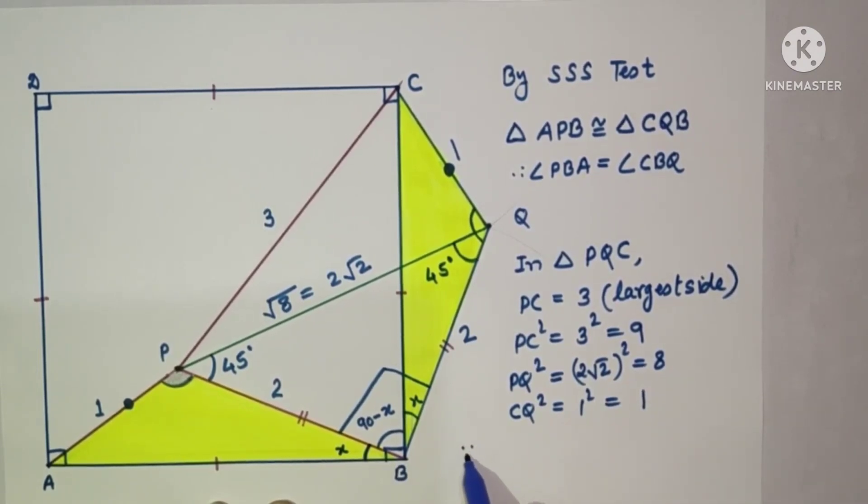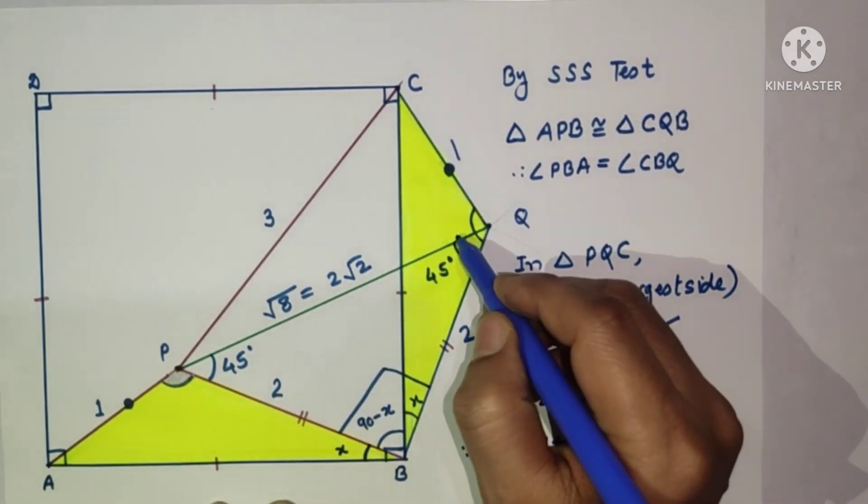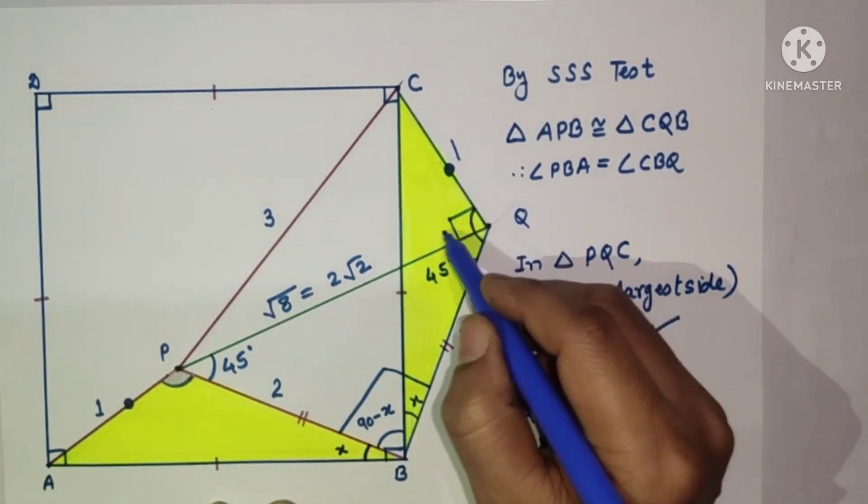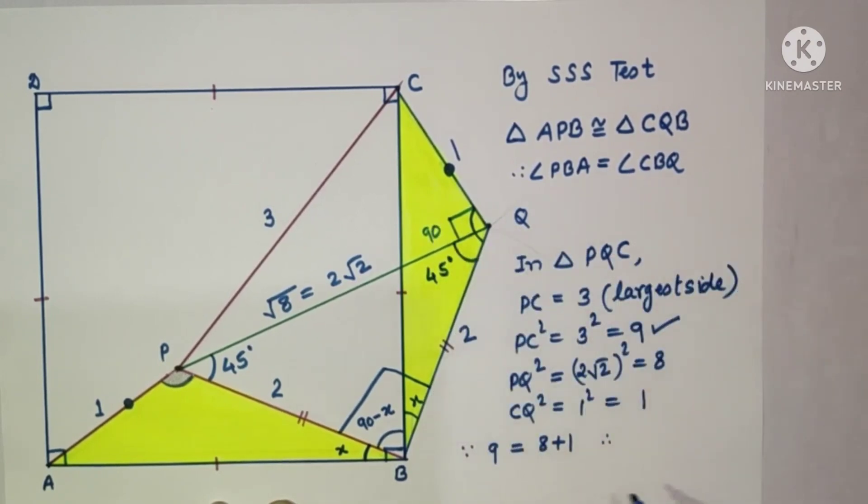Now, since the largest side squared, 9, is equal to the sum of the squares of the other two sides, therefore we can say that this triangle is definitely a right-angle triangle by the converse of Pythagorean theorem. And the angle opposite to the largest side will be 90 degrees. Therefore, angle CQP is equal to 90 degrees.